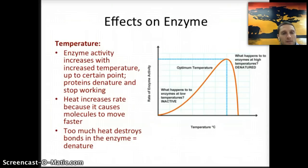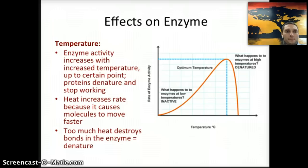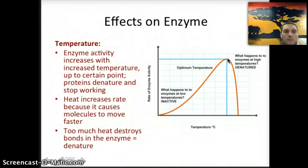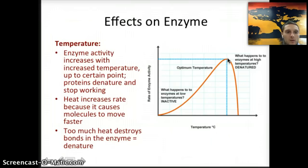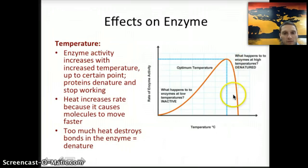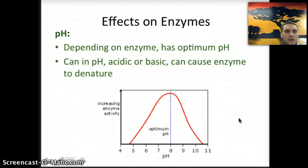A couple of different conditions can affect enzymes. The first is temperature. Enzyme activity increases with increased temperature — here's a graph showing rate of enzyme activity on the y-axis and temperature on the x-axis. As temperature increases, enzyme reactivity increases up to a point, because at that point the higher temperature causes the enzyme to be denatured or break down. The molecules are moving faster and faster, allowing substrates to bind faster, but at a specific temperature that enzyme breaks down and is no longer able to function, so we see a very rapid decrease in enzyme activity. Too much heat causes those enzymes to denature and break down.